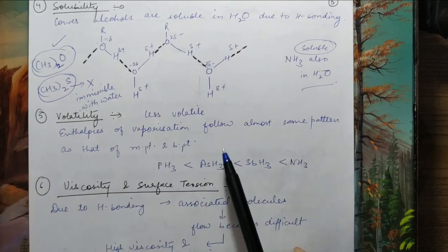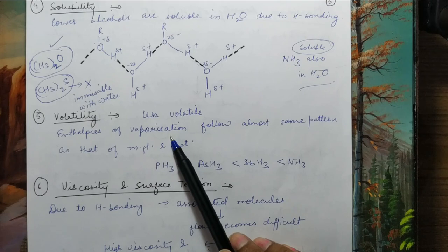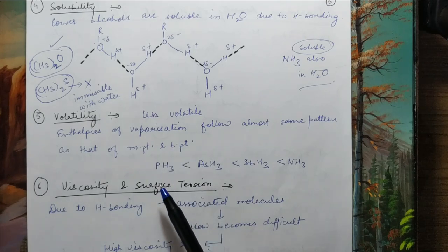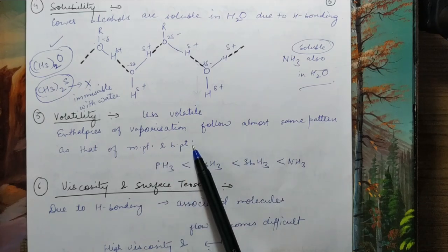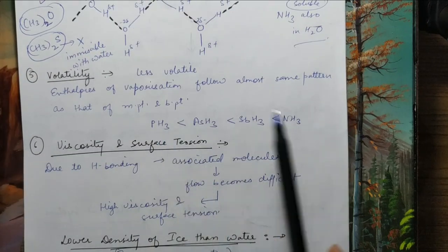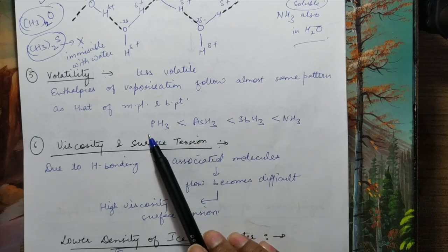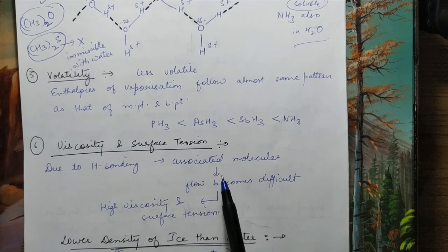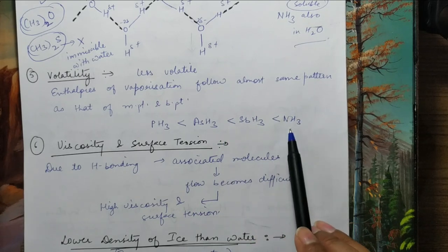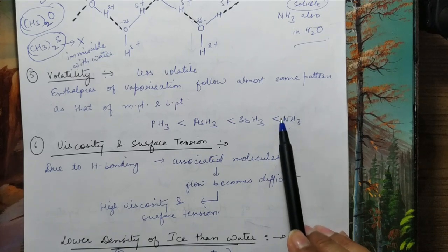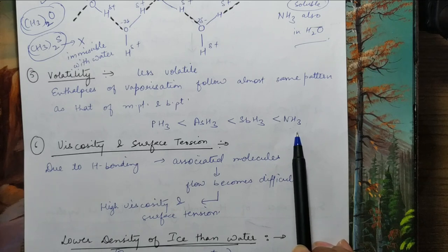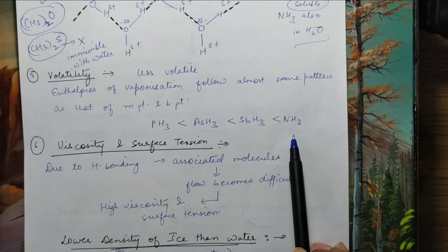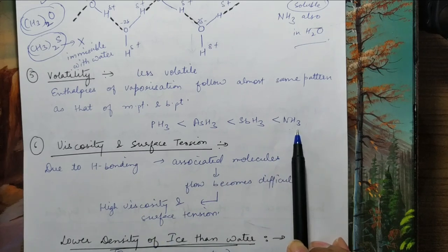Next is volatility. The enthalpy of vaporization — how much heat must be given to vaporize molecules — follows the same pattern as melting and boiling points. For example, among the hydrides of Group 15 (ammonia, phosphorus, arsenic, antimony): as we go down the group, melting and boiling points should increase due to increasing size and Van der Waals forces. But ammonia, the first hydride, has the highest melting and boiling point due to hydrogen bonding. The higher the boiling point, the more heat energy needed to vaporize it, so enthalpy of vaporization is also high — meaning hydrogen bonding makes a molecule less volatile.